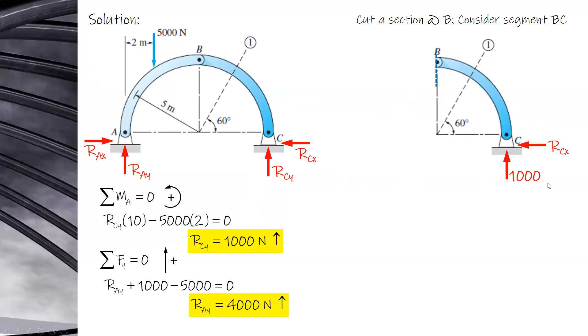CY is already known — 1,000 N — and RCX is still needed. Since B is a hinge, the moment at B is zero. From summation of moments at B on the cut segment, you can solve for RCX.